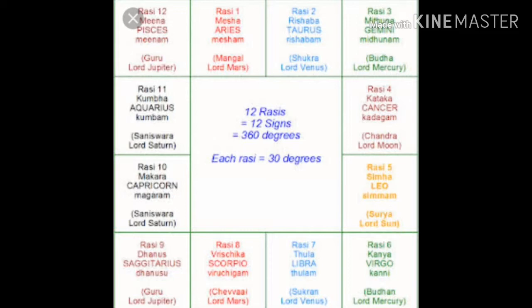Moon is the most important planet in Vedic Astrology because it represents the mind and the emotions. Moon is also the fastest moving planet in the zodiac — it stays in one sign for 2.25 days. So it covers the entire zodiac belt in 27 days. If you multiply 2.25 days by 12 signs, you get 27. It is through the Moon that Nakshatras, transits, and all other calculations are determined. Even your dasha calculations are done using the Moon at the time of your birth.